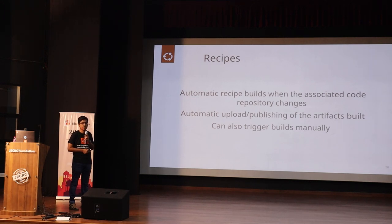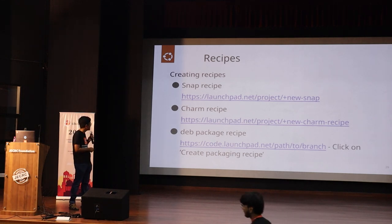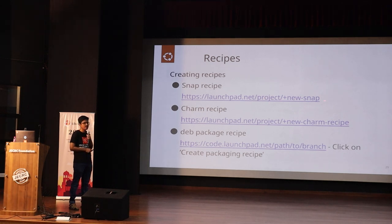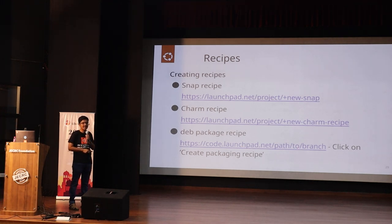Automation is optional — you can also trigger builds manually, which is useful when setting up a recipe and tweaking configuration. Launchpad does offer the ability to do manual triggers as well. Here are the URLs for creating a snap recipe, charm recipe, and deb package recipe. You'll replace 'project' with your project name, or use your username to create a recipe under your own account. For deb package recipes the process is slightly different — you go to the Git repository and branch first before creating the packaging recipe.